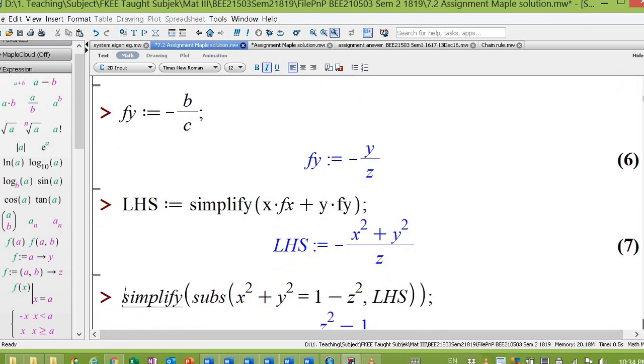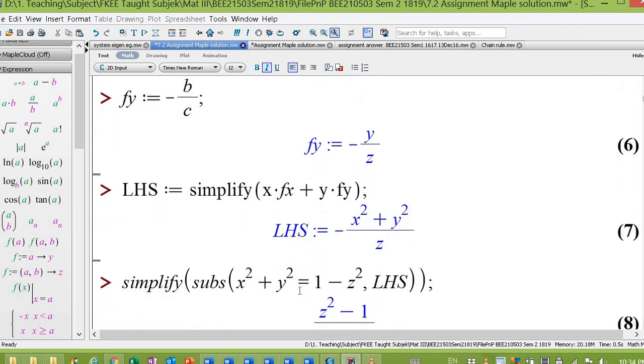So we substitute x² + y² = 1 - z² into the left hand side here. Then simplify it.